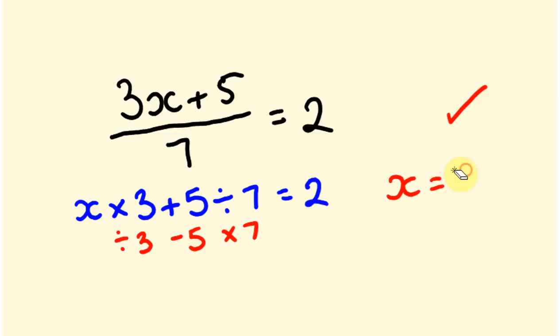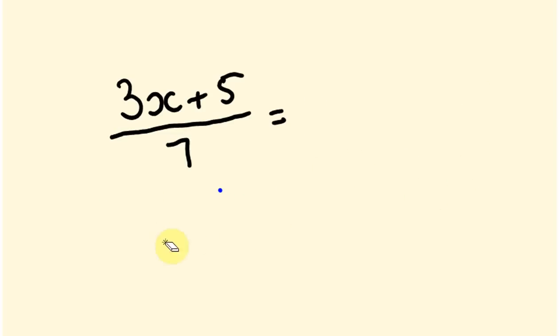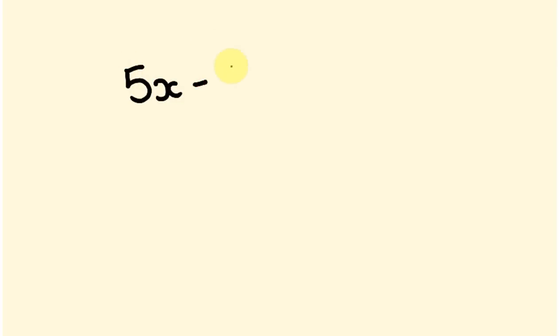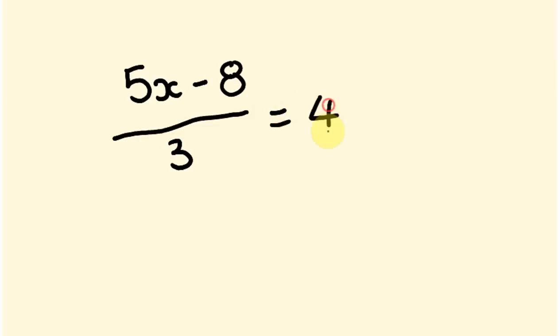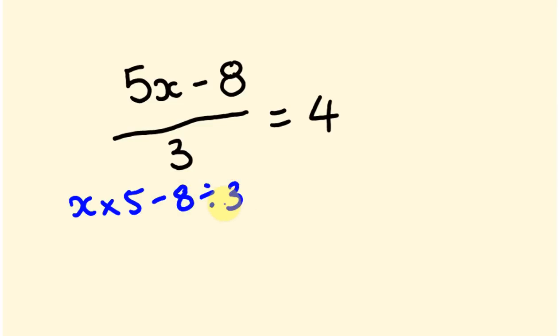Some people do this quite naturally after they've been doing these types of equations. Let me give you another example. Say we do (5x − 8) ÷ 3 = 4. If we write out the order of operations: starting with x, we times by 5, we take away 8, we divide the whole thing by 3, and we get the answer 4.